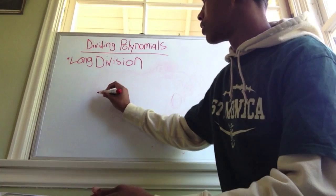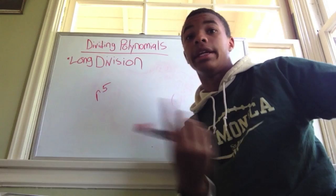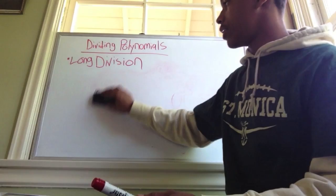Just remember, every time it skips a number it has to be consecutive. So if you're at x³, you have to go from x³ to x squared to x. If you're at x²⁰, you have to go x²⁰, x¹⁹, etc. So here: r⁵, r⁴, r³, r², and r — and r is the same thing as r¹.